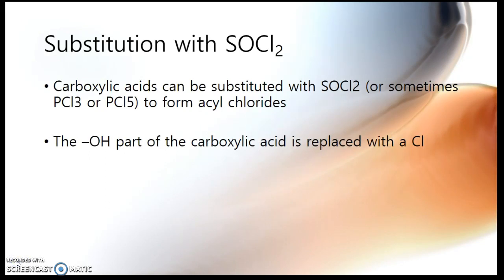Okay, so the first reaction that we can think about with carboxylic acids is a substitution reaction with thionyl chloride, or sometimes known in our class anyway as SOCl2. You can also use PCl3 or PCl5, but not always. It only works for some reactions. So I would recommend sticking with thionyl chloride wherever you possibly can. And this produces an acyl chloride. So what happens is the OH part of the carboxylic acid gets replaced with a chlorine. Let me just show you what that looks like.